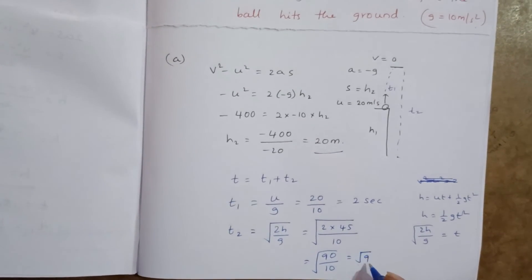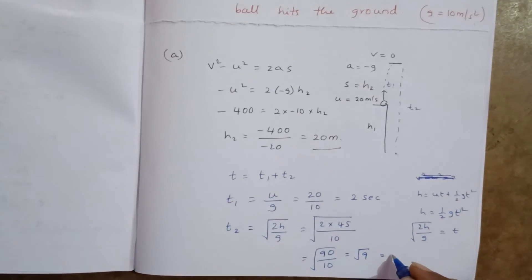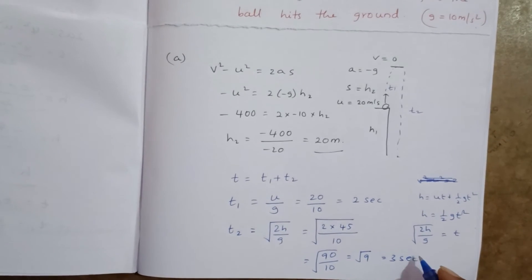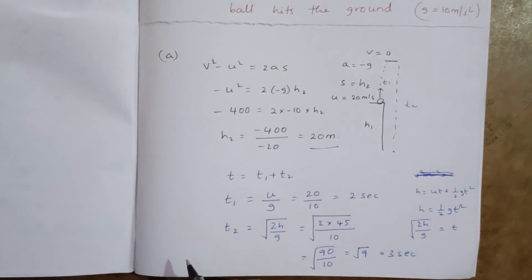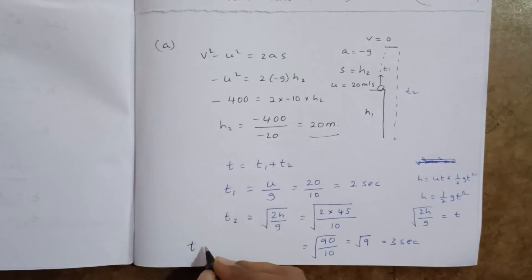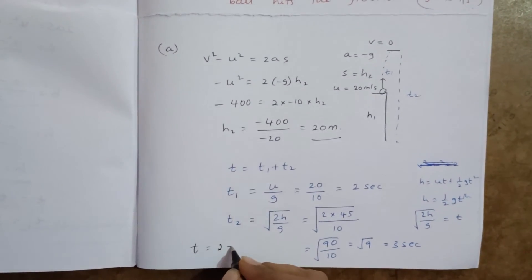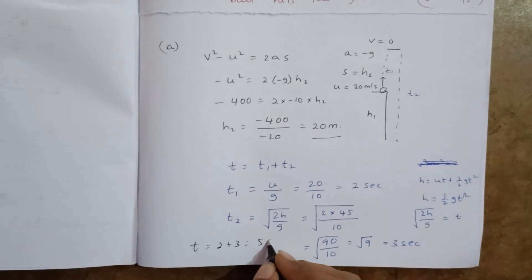9 root is 3 seconds. So total time 3 plus 2, 5 seconds. Total time t equal to 2 plus 3 equal to 5 seconds.